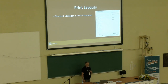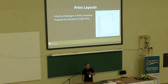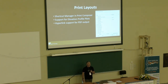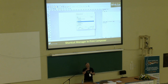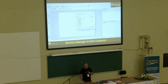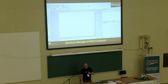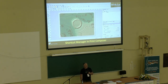Moving into print layouts, there's now a shortcut manager in the print composer, support for elevation profile plots within the print composer, and hyperlink support for PDF output. In the print composer, I can go to Settings > Keyboard Shortcuts and see a list of all the actions. I can set up custom keyboard shortcuts for any of them — for example, using Ctrl+M for Add Map. Now I just hit Ctrl+M on my keyboard, and I automatically have that tool activated and can add my map to the layout.